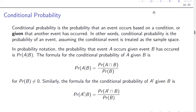So we now continue with conditional probability. Conditional probability is the probability of an event occurring based on a condition, or given that another event has occurred. In other words, conditional probability is the probability of an event assuming the conditional event is treated as a sample space. So you may have two events A and B. The probability that event A occurs given that event B has occurred is denoted as P(A|B), where the bar means 'given B.' The general formula is: P(A|B) = P(A∩B) / P(B).